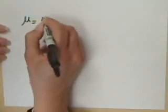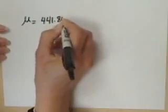According to the Bureau of Labor Statistics, the average weekly pay for a U.S. production worker was $441.84. So we know μ is equal to 441.84.